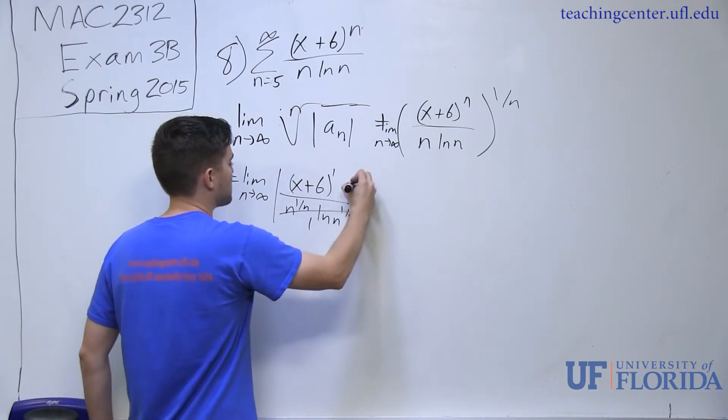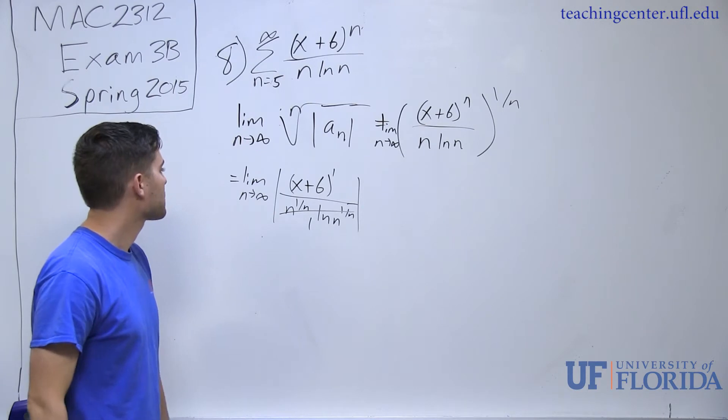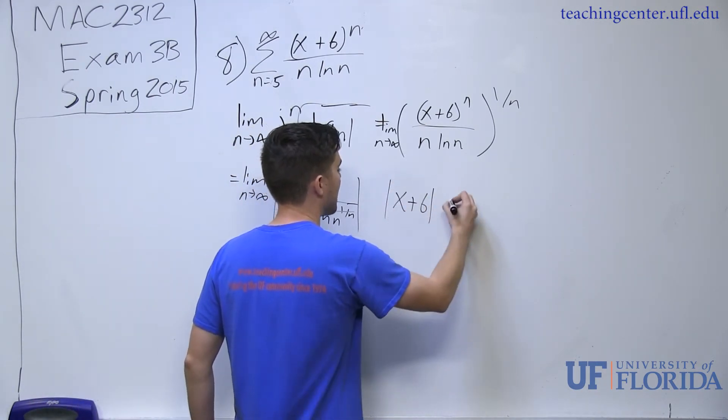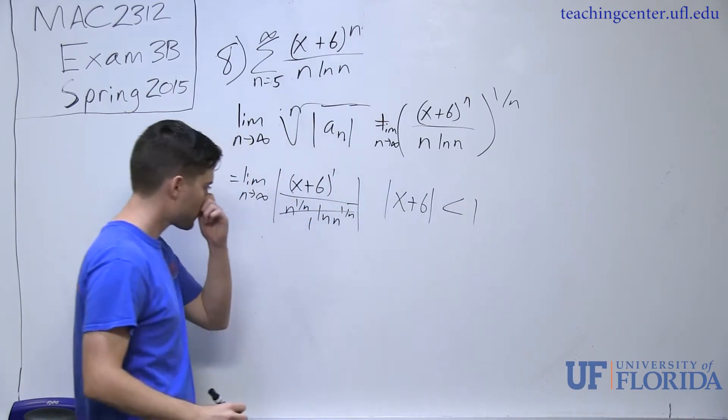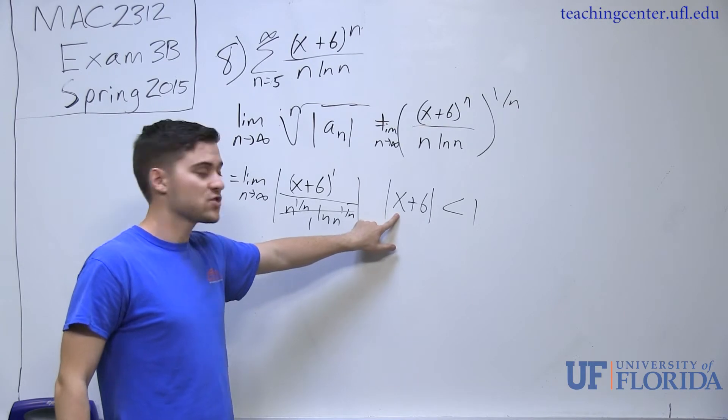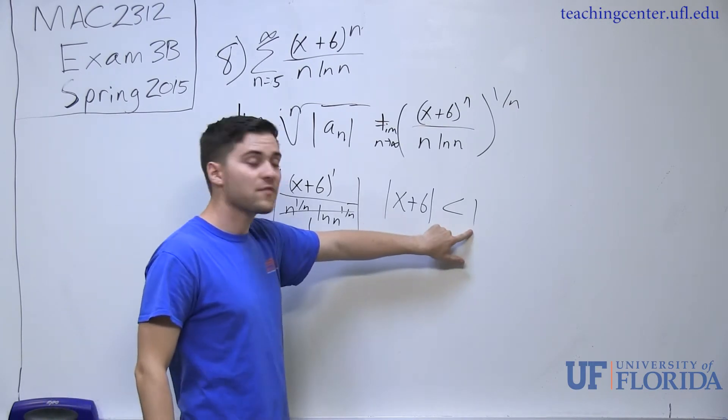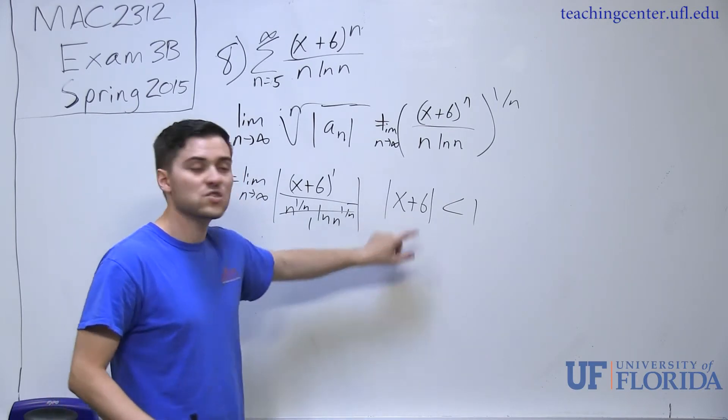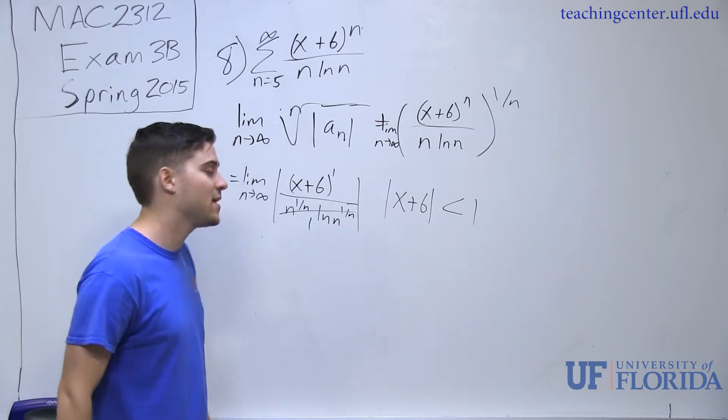I'm still taking the absolute value, so I shouldn't forget that. Now what I'm left with is x plus 6 absolute value is less than 1. My x is to a 1 coefficient and there is no external power, so my radius of convergence in this case is just going to be 1. But we're looking for interval of convergence, so let's take this one step further and see if we can find the interval.